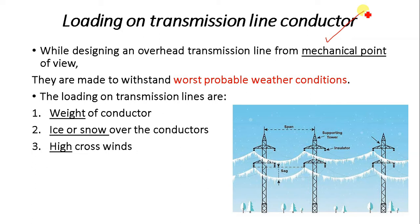The third loading type is high cross winds. In some areas you face stormy weather, so we have to consider the effect of wind because it causes additional load in the horizontal direction. In India, most areas have no problem of ice coating, so we can ignore the second point. But in areas like Jammu & Kashmir, Ladakh, Himachal Pradesh, Sikkim, and Arunachal Pradesh, where low temperatures are accompanied by snow and wind, the sag of the conductor tends to increase due to ice coating and wind pressure.